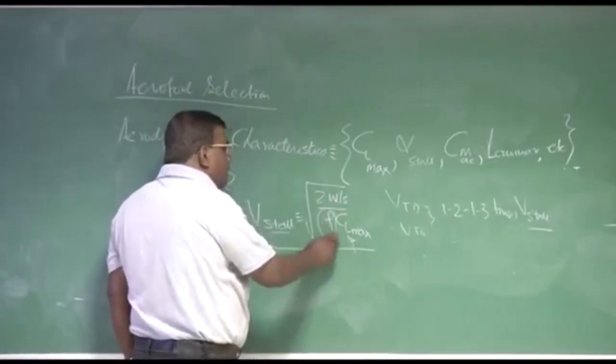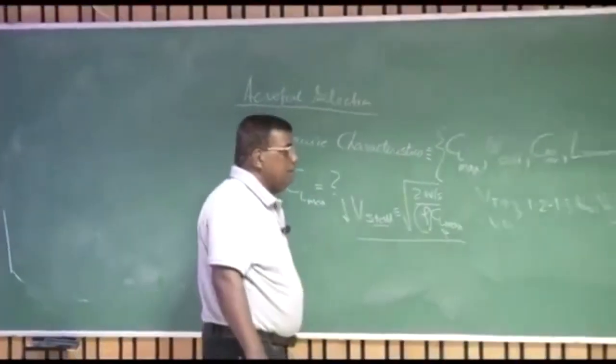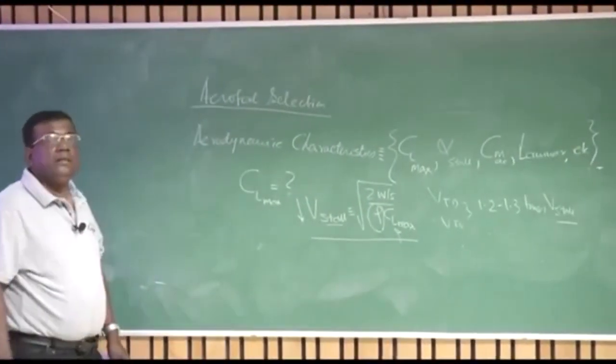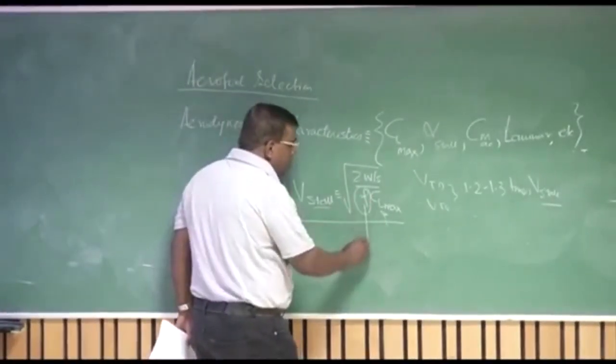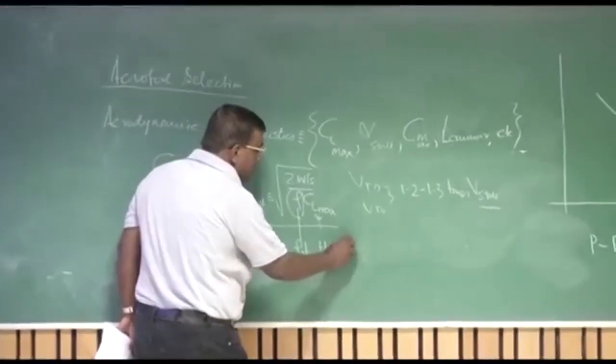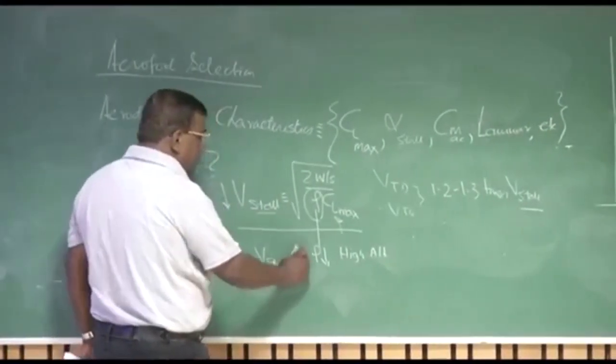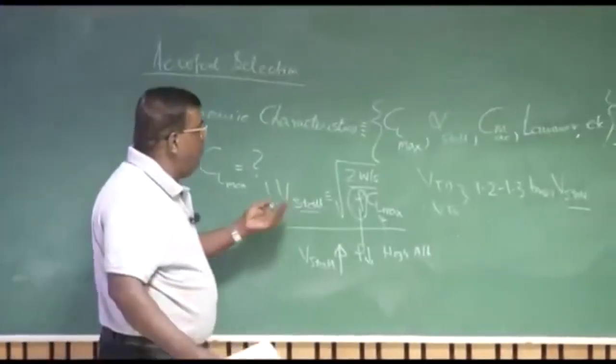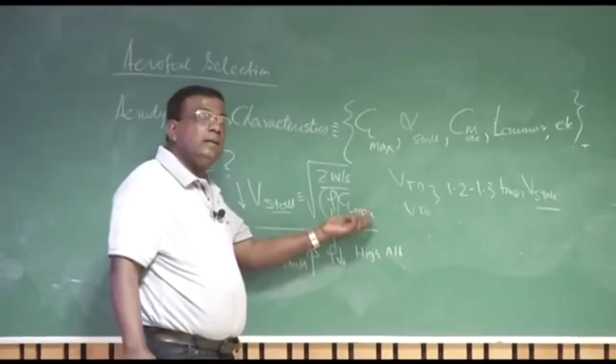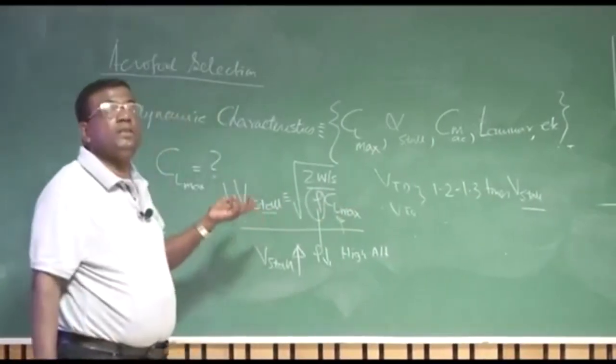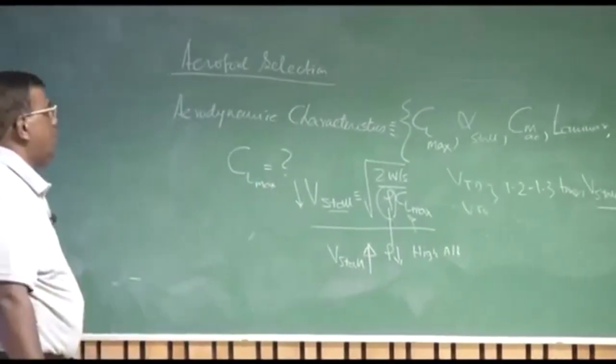If you see, if you are taking off from a high altitude, maybe Leh, Ladakh, some place like that, that the density of air will be lesser compared to sea level density of air. So there also you see that because of high altitude, because rho goes down at high altitude, your V stall has a tendency to be more than V stall required at sea level. So how do I compensate that, because anyway I have to takeoff from Leh. So if I have a larger CL max, then I can manage that much of V stall which my engine power can deliver.